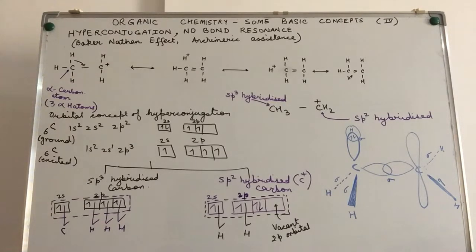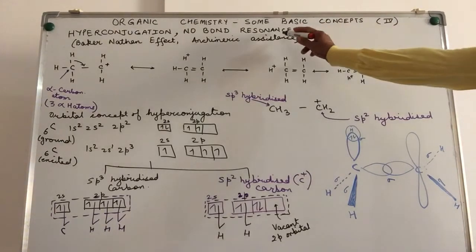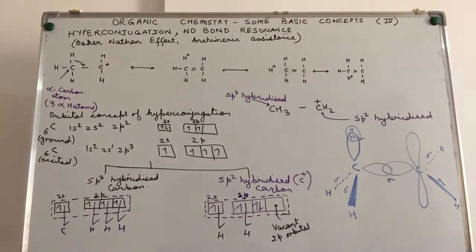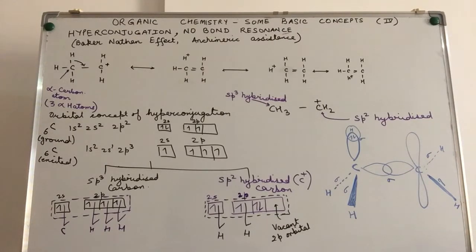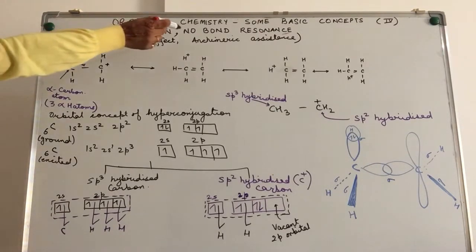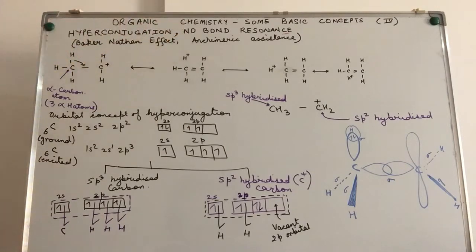Now if you take the word itself — no bond resonance — this concept is nothing but an extension of the concept of resonance which we have dealt with in the earlier video. Resonance is simply like a ball being tossed around from one person to the other so that it remains within the group. Here we are talking about electron shifting which will result in no bond between two atoms. So it's no bond resonance.